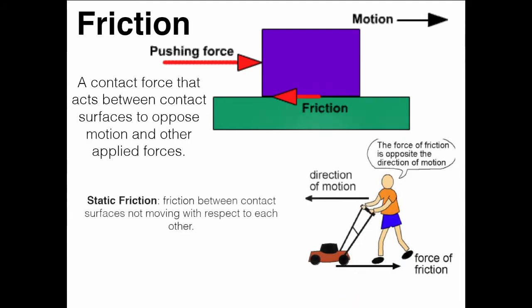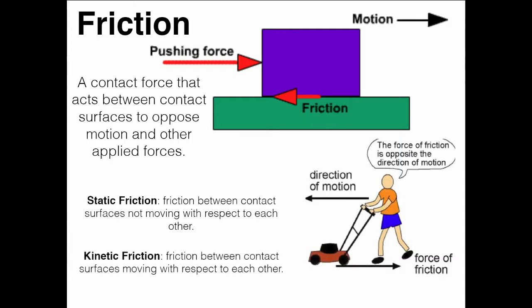There are two types of friction. Static friction is friction between contact surfaces not moving with respect to each other — if I push on a box and it's not moving but I still feel resistance, that's static friction. Then there's kinetic friction, which is friction between contact surfaces moving with respect to each other. If I push a box and it starts to move, you'll still feel friction opposing you, but now it's kinetic friction because the contact surfaces between the table and the box are moving with respect to each other.